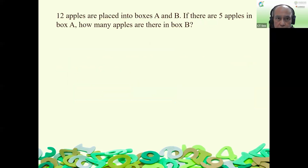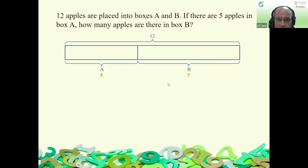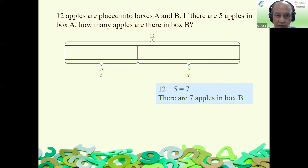Another example: 12 apples are placed into two boxes A and B. If there are five apples in A, how many are in B? The whole is 12, so we draw the long whole bar representing 12, then part of it is in A and part in B. A has five, and we want to know B. From the bar model, the child sees they need to subtract five from 12 to find there should be seven in box B.